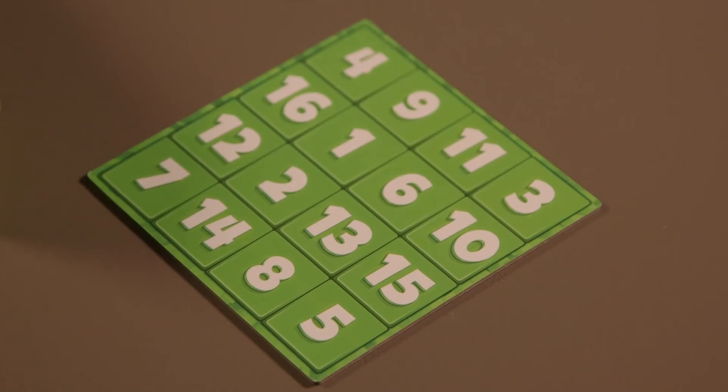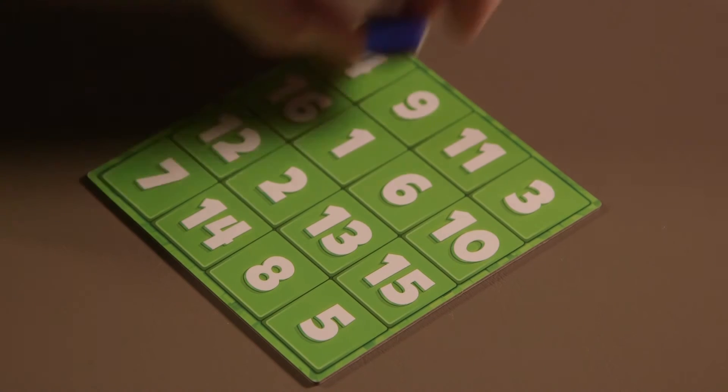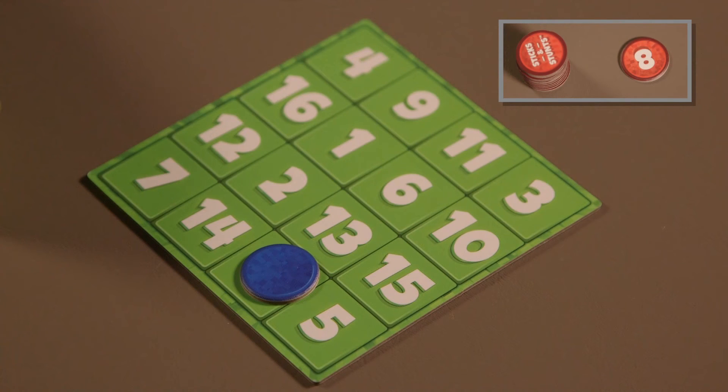Once an activity is complete, the winning player or team of players may place one bingo marker over the bingo board number that corresponds to the number token.